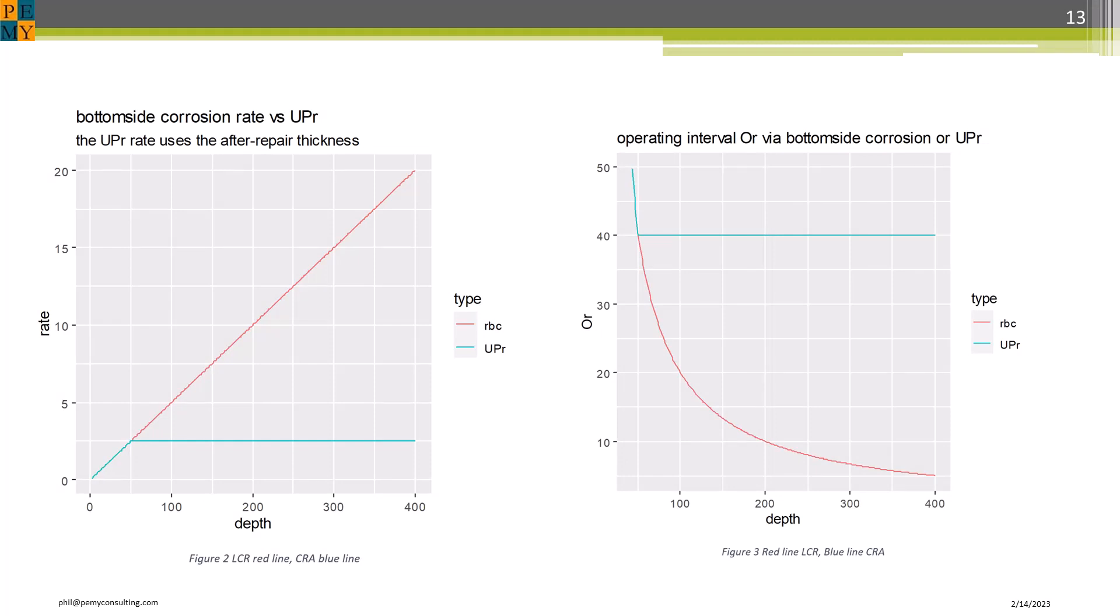If we plot corrosion rate versus depth, as on the left side, we see that LCR depth increases linearly with time, as expected. However, the corrosion depth for ACR stops at a level determined by the repair-to thickness, shown by the blue line. The effect on the computed interval is shown on the right side. Here, the interval should keep decreasing as corrosion depth increases, but the blue line shows that the CRA just truncates the interval.